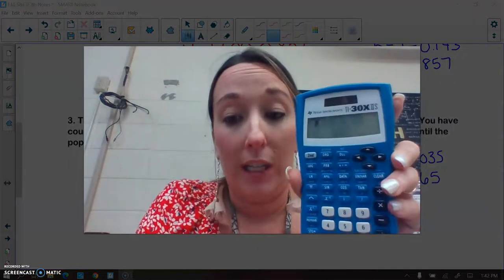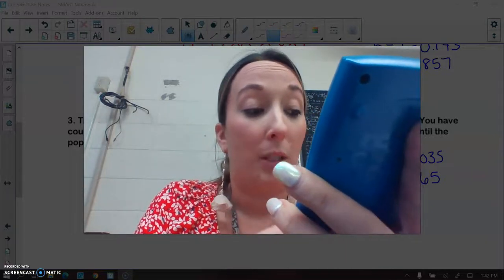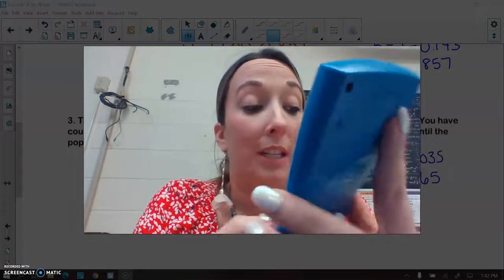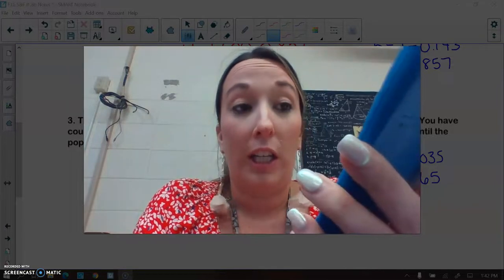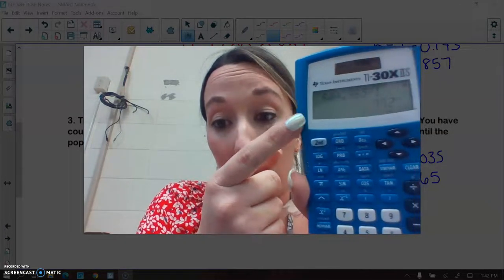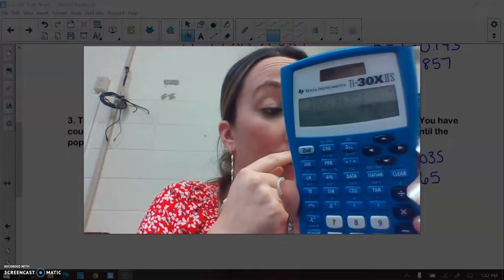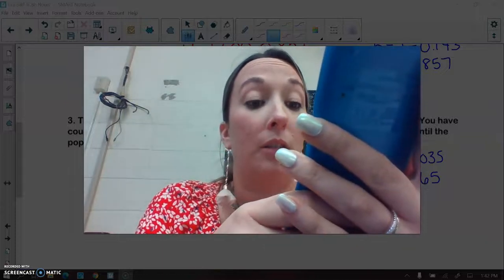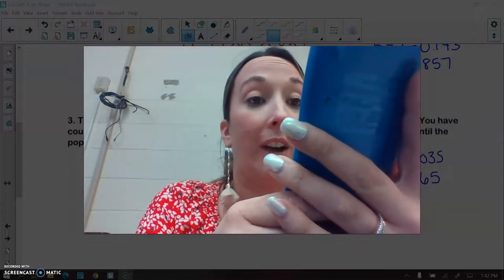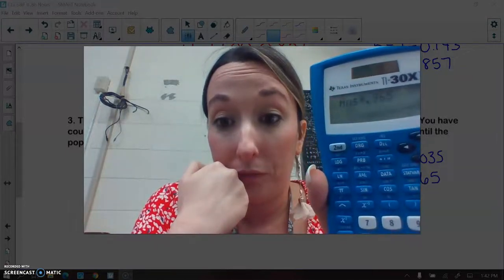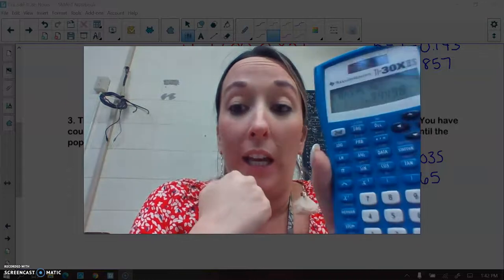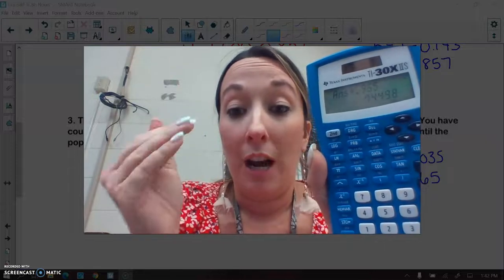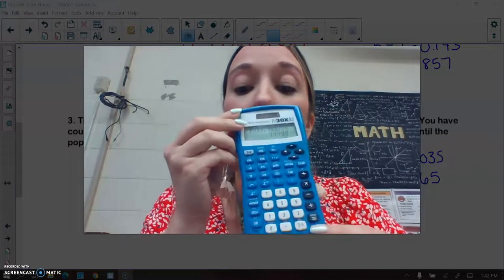In your calculator, you're going to type in 80 times 0.965 and then to the first power. That means that would be one year. And you're going to hit equals. And is your population below 15 yet? No, it is 77.2. So then I'm going to hit times 0.965 again. So this pops up. And then you hit enter. And is your population below 15 yet? No. And that was after two years. So now from this point, what we could do is we can just keep hitting enter.